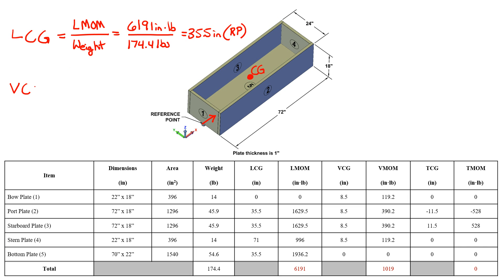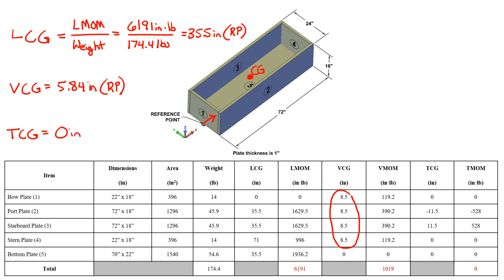My vertical center of gravity works out to 5.84 inches above my reference point, which makes sense — this is lower than the vertical center of gravity of each individual plate because my bottom plate, which is very heavy, lowers the overall center of gravity. My transverse center of gravity is 0 inches, which makes sense since my barge is symmetric about the center line. If the barge had a transverse center of gravity other than zero, I would expect it to sit unevenly in the water since the moment would be acting on one side.